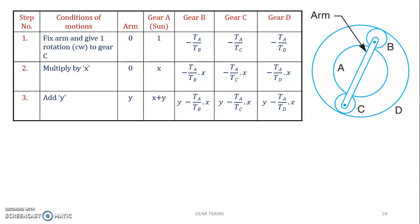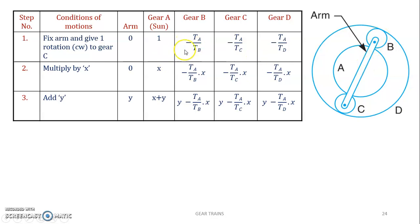Fix the arm — so arm rotation is zero. Give one rotation clockwise to gear A, which we consider positive. For gear B, gear A drives gear B, so A is the driver and B is the follower. The train value is TA divided by TB. Since gear A is clockwise, gear B rotates anticlockwise — hence it is negative, because when gears are meshed externally, their directions are opposite.